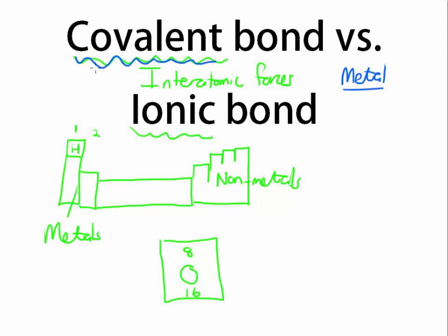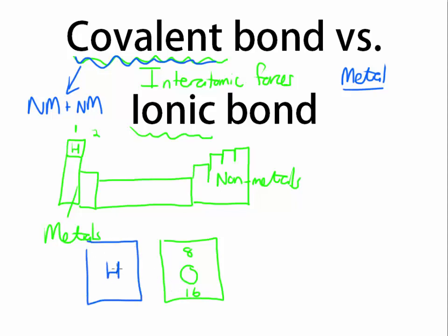A covalent bond exists between one non-metal and another non-metal. Sometimes there can be more than two non-metals, but generally speaking, a covalent bond will be between non-metals. So if we take oxygen and bond it to hydrogen — hydrogen has an atomic number of 1 and a mass number of 1 — the bond that forms between hydrogen and oxygen is called a covalent bond.